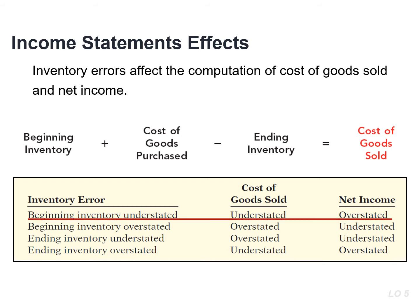If beginning inventory is understated, cost of goods sold will be understated and net income will be overstated. If, however, ending inventory is understated, cost of goods sold will be overstated and net income will be understated.